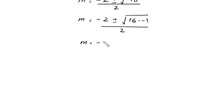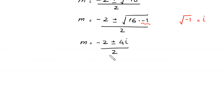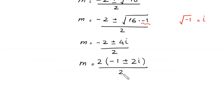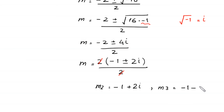Next, m is equal to negative 2 plus or minus square root of negative 1 times 16. Since square root of negative 1 is i, this becomes negative 2 plus or minus 4i, divided by 2. We factor out 2 as a common factor: 2 times (negative 1 plus or minus 2i) divided by 2. The 2 cancels, giving us m₂ is equal to negative 1 plus 2i, and m₃ is equal to negative 1 minus 2i.